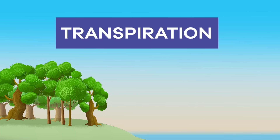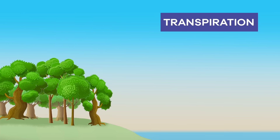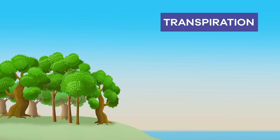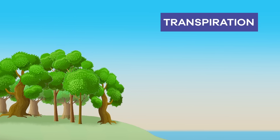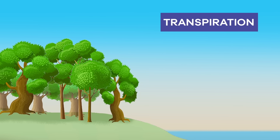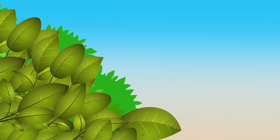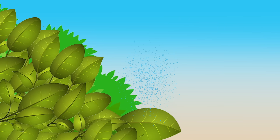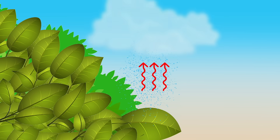Next up, transpiration. Transpiration is the process by which plants lose water in the form of water vapor. Basically, it is the release of water through a plant's leaves and is similar to evaporation because that water vapor goes into the air.